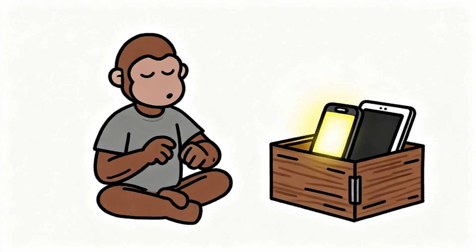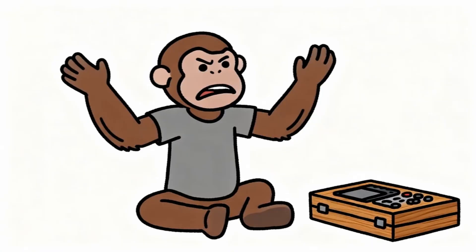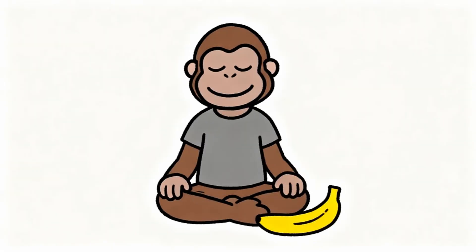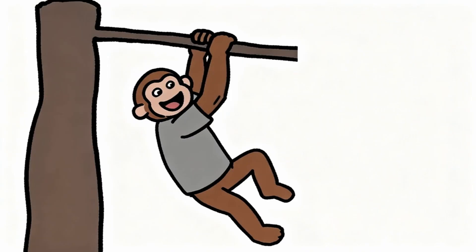Smart monkeys learn to manipulate their own dopamine systems instead of letting technology companies control them. First strategy is dopamine fasting. Monkey removes all artificial dopamine sources for specific time periods. No magic rectangles, no instant notifications, no easy entertainment. Brain initially protests loudly because it expects constant stimulation. During dopamine fast, monkey brain slowly recalibrates to normal baseline levels. What felt boring before starts feeling peaceful. What felt slow before starts feeling appropriately paced. What felt difficult before starts feeling like interesting challenge instead of impossible obstacle.